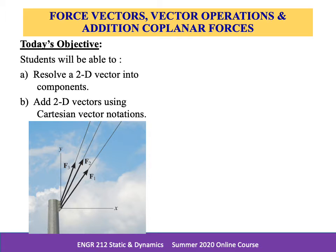Hi, this is the first part of Chapter 2, Forces and Vectors. In this chapter, we'll try to show how to add forces and resolve them into components using the parallelogram law. We'll express force and position in Cartesian form and explain how to determine the vector's magnitude and direction. We'll also introduce the dot product later in order to use it to find the angle between two vectors or the projection of one vector onto another.